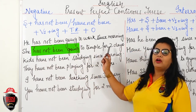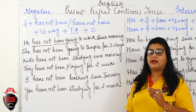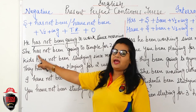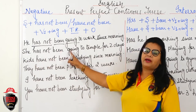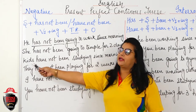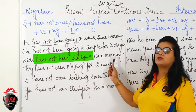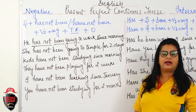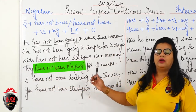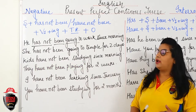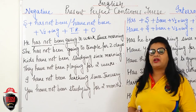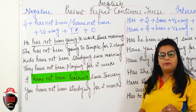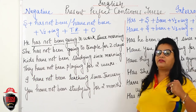'Kids have not been studying since morning.' Kids is plural so 'have' is used. 'I have not been teaching since January.' 'I have not been studying since January.' With I and you, 'have' is used; have not been plus V1 ING. 'You have not been studying for 2 months.' Aap pichhle doh mahinon se padhai nahi kar rahe ho. Remember: whenever 'been ING' is used, it is Present Perfect Continuous Tense; 'been' will always be there before ING.